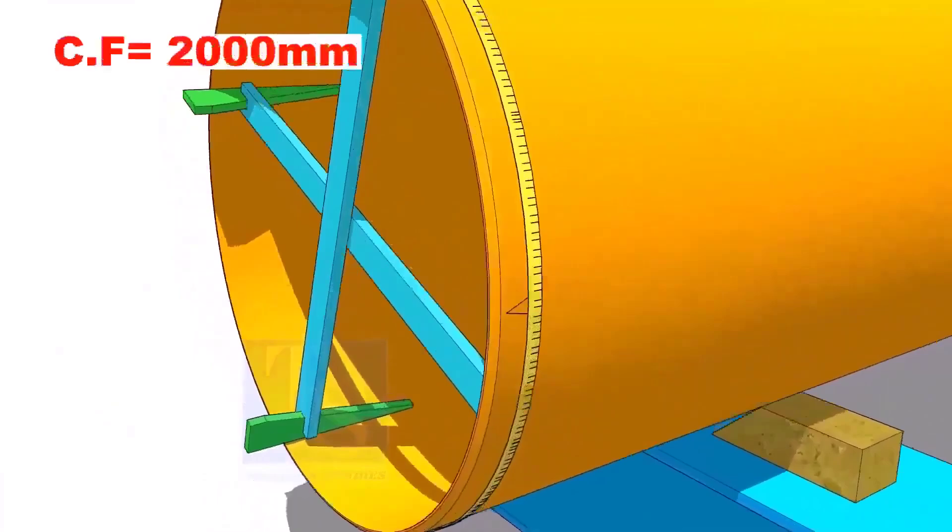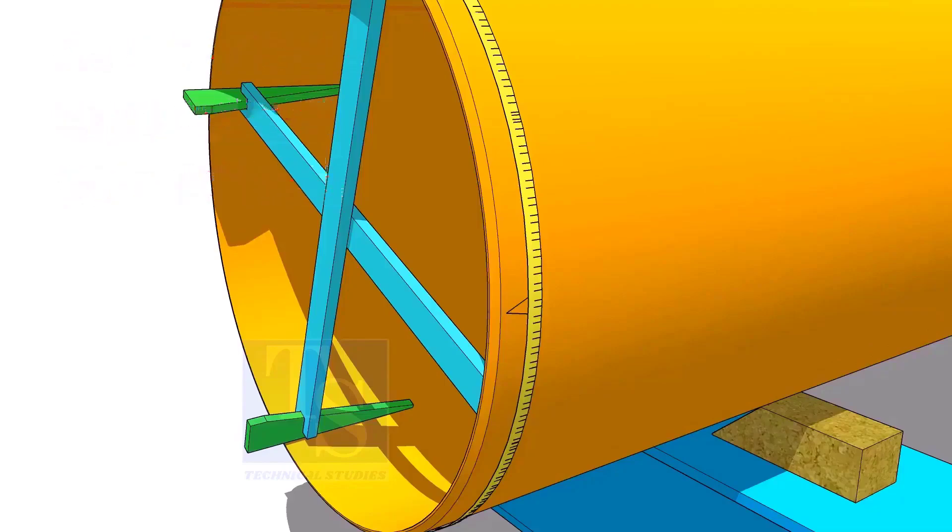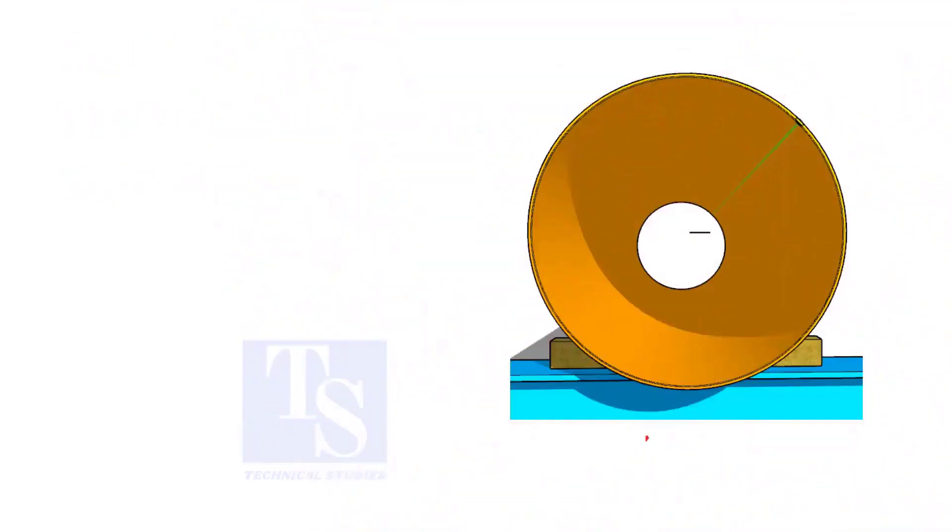Assume that the circumference is 2000 mm. Divide it by 4. Now you have the arc length of 90 degrees. Mark 500 mm each, starting from the center line, as 0, 90, 180, and 270.